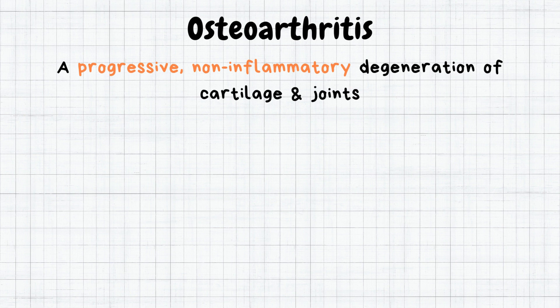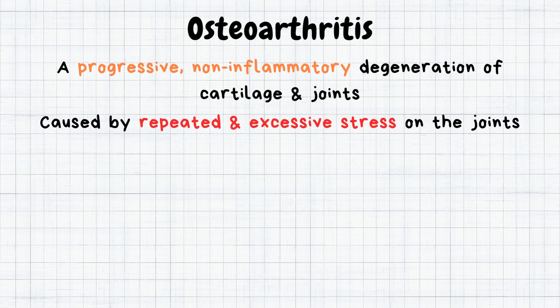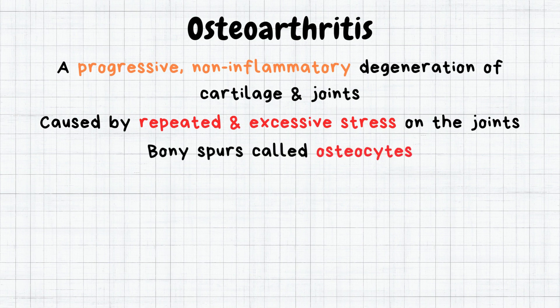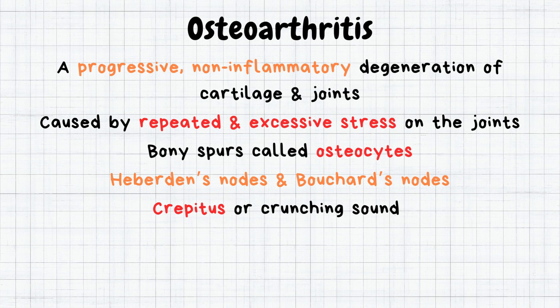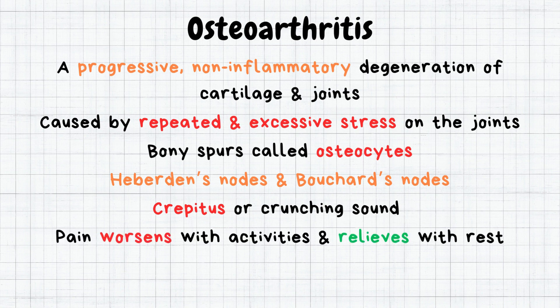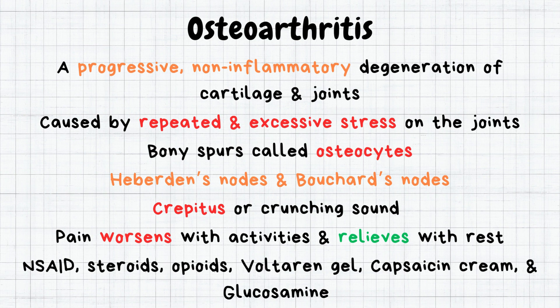In summary, OA is a progressive non-inflammatory degeneration of cartilage and joints, mostly caused by repeated and excessive stress on the joints. Those with OA can develop bony spurs called osteophytes, as well as bony growths in the fingers called Heberden's nodes and Bouchard's nodes. OA also presents with crepitus, or crunching sounds with movement. Pain worsens with activity and relieves with rest. Medications include NSAIDs, steroids, opioids, Voltaren gel, capsaicin cream, and glucosamine.